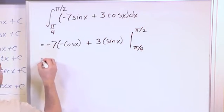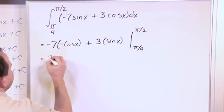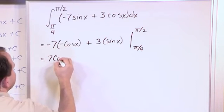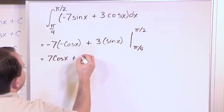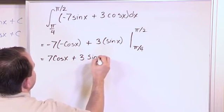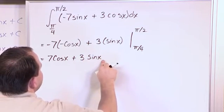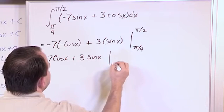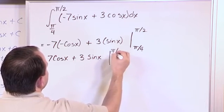Now just to make it clear, let's simplify this a little bit. We have 7cos(x). We will remove the parenthesis just to make it clear. Now we're evaluating from π/4 to π/2.